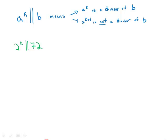For the positive integers a, b, and k, a to the k double slash b means that a to the k is a divisor of b, but a to the k plus 1 is not a divisor of b.